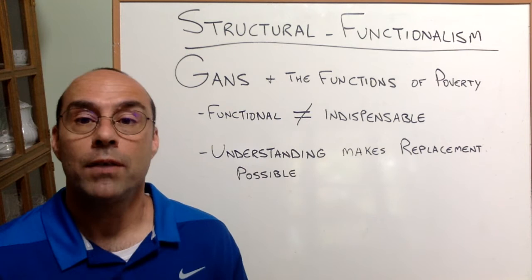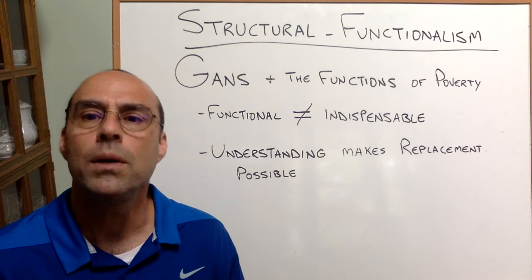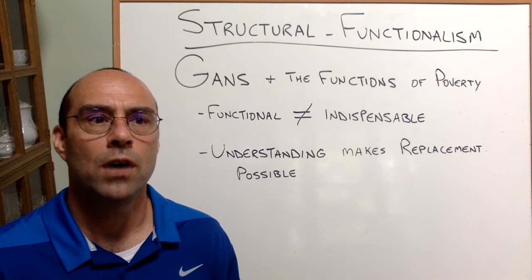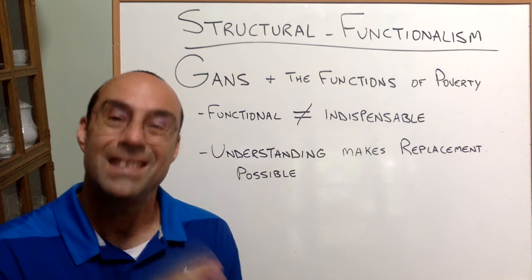Anyway, Herbert Gans looks at poverty and says, let's do a functional analysis of it, but the whole reason we want to do it is in order to get rid of it. So he writes, his first article on it is called The Positive Functions of Poverty.